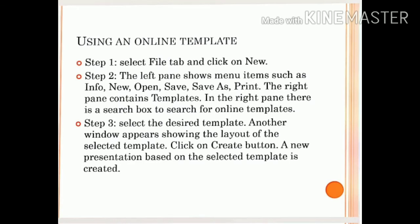Next, using an online template. We can create a blank presentation, an installed template, or an online template. Step 1: Select the File tab and click New. The left pane shows menu items such as info, new, open, save, and save as print. The right pane contains templates. In the right pane, there is a search box to search for online templates. Step 3: Select the desired template. Another window appears showing the layout of the selected template. Click the Create button. A new presentation based on the selected template is created.